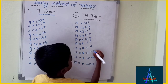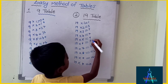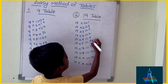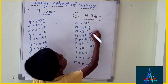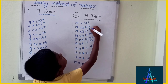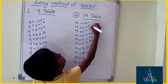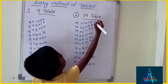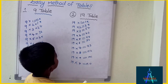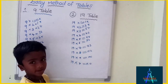And on the right write 0, 1, 2, 3, 4, 5, 6, 7, 8, 9. This is the simple method of the 9 times table.